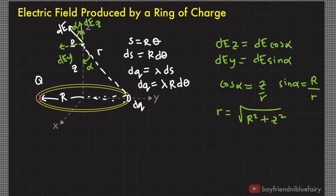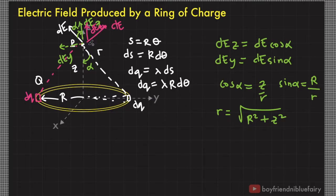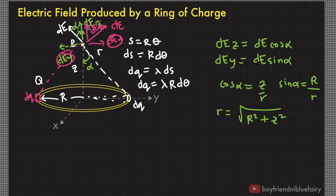If we look at another dq on the opposite side of the ring of charge, it produces another electric field dE with a z-component dE sub z parallel to the z-axis and another component perpendicular to the z-axis dE sub y. Notice that these two perpendicular components cancel out — one points right and the other points left, equal in magnitude by symmetry. Therefore we only need to calculate the summation of the z-components of the electric field from all infinitesimal charge elements; the other components cancel due to symmetry.